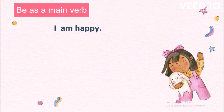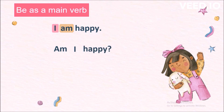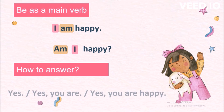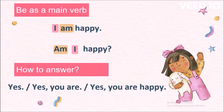In 'I am happy,' I is the subject and am is the main verb. To form a yes/no question, we have to change the word order of the subject and the main verb: Am I happy? First the main verb, then the subject, and finally the rest of the sentence. How to answer: you can either say yes, or yes you are, or yes you are happy.